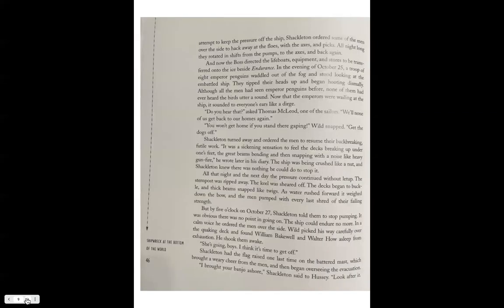In a desperate attempt to keep the pressure off the ship, Shackleton ordered some of the men over the side to hack away at the floes with axes and picks. All night long they rotated in shifts from the pumps to the axes and back again. Now the Boss directed the lifeboat equipment and stores to be transferred onto the ice beside Endurance. On the evening of October 25th, a troop of eight emperor penguins waddled out of the fog and stood looking at the embattled ship.